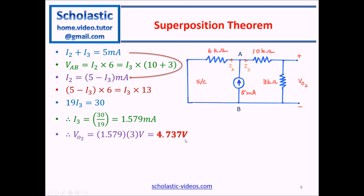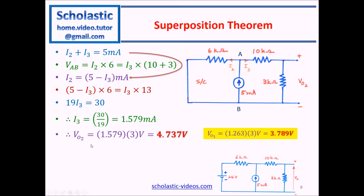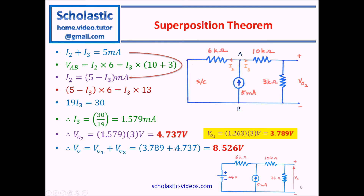We now calculate the total V0 by superposition. V01 = 3.789 volts and V02 = 4.737 volts. Therefore V0 = V01 + V02 = 3.789 + 4.737 = 8.526 volts.